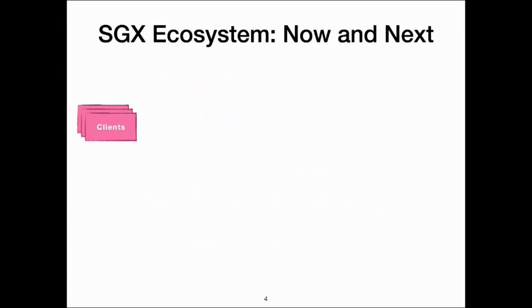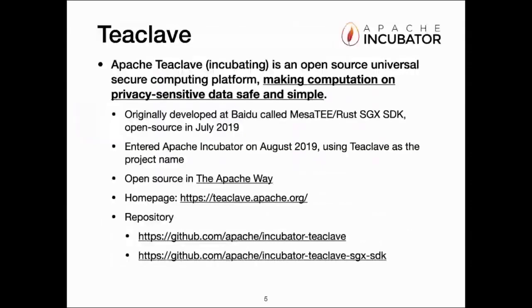So let's come to the Teaclave project. Currently, Teaclave, or Apache Teaclave, is an open-source universal secure computing platform which makes computation on privacy-sensitive data safe and simple. This project was originally developed at Baidu under the name Mesatee, then open-sourced in July 2019. We donated the Mesatee project along with the Rust SGX SDK to the Apache Software Foundation in August 2019 and changed the project name to Teaclave. Currently, Teaclave is under the Apache incubator and open-source in the Apache way.